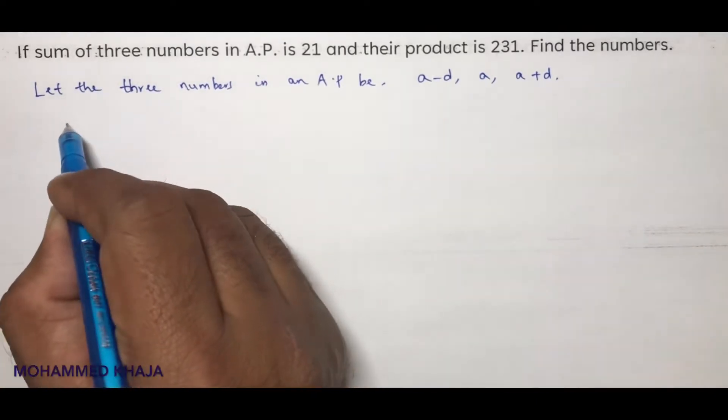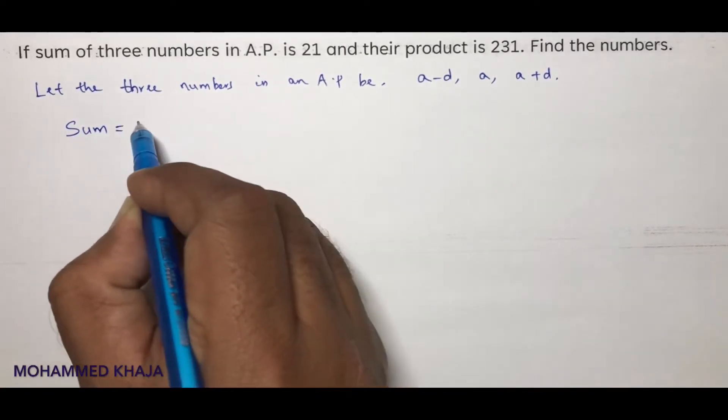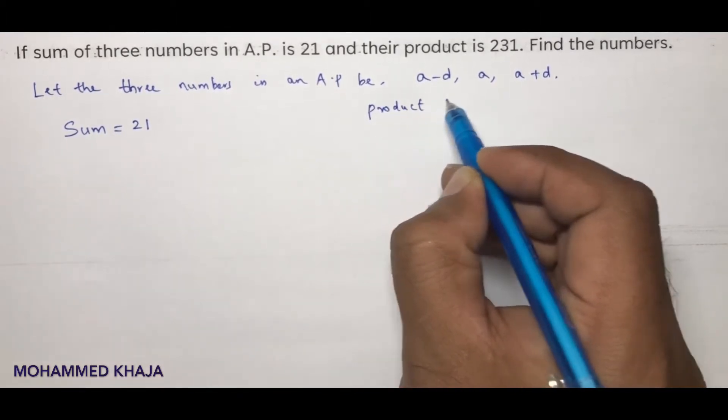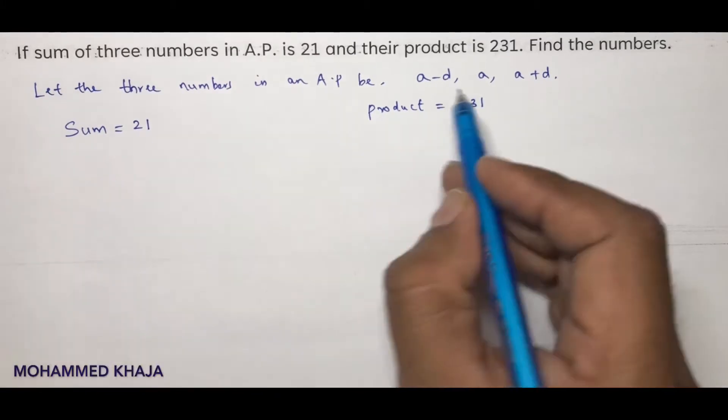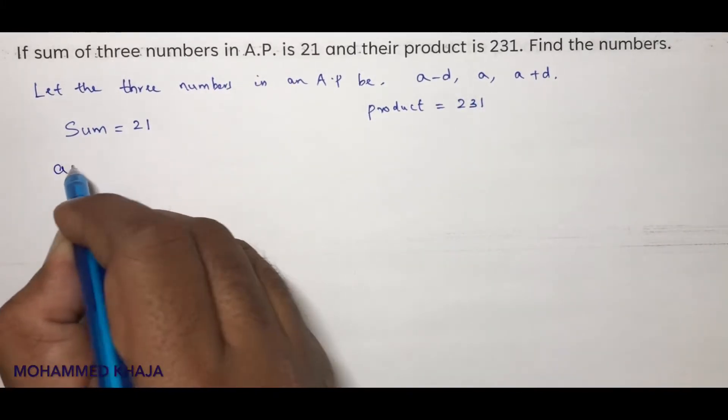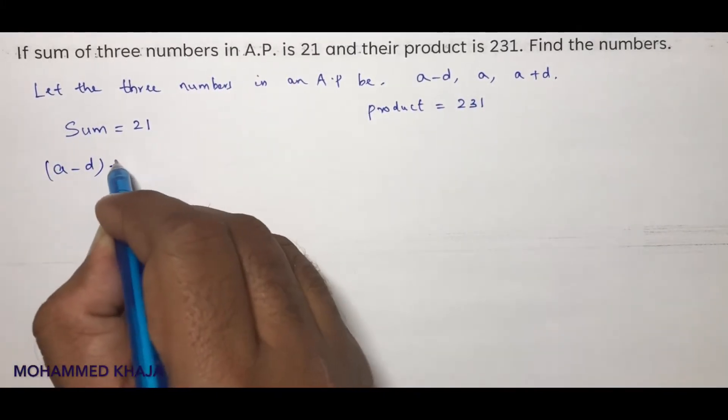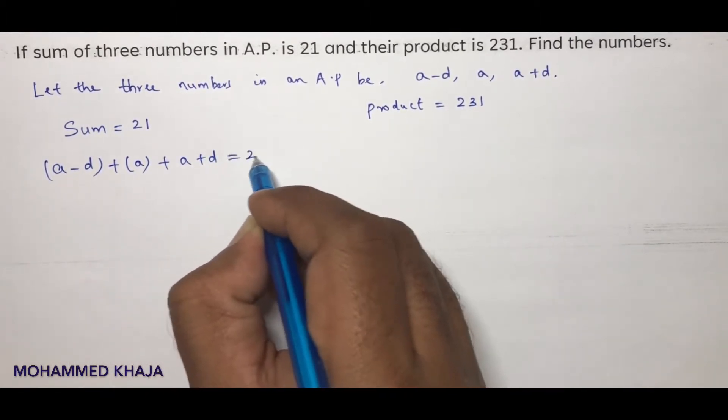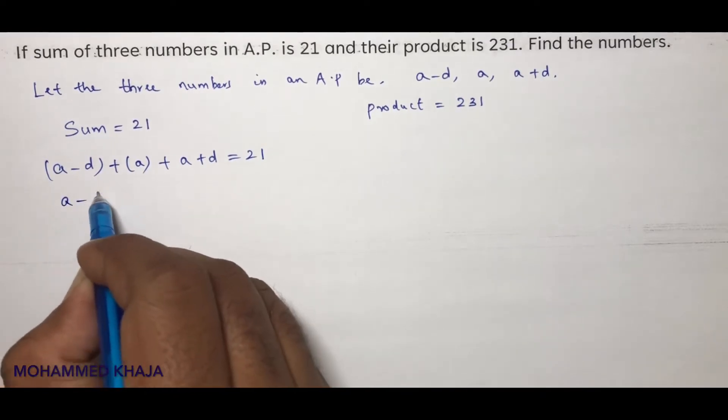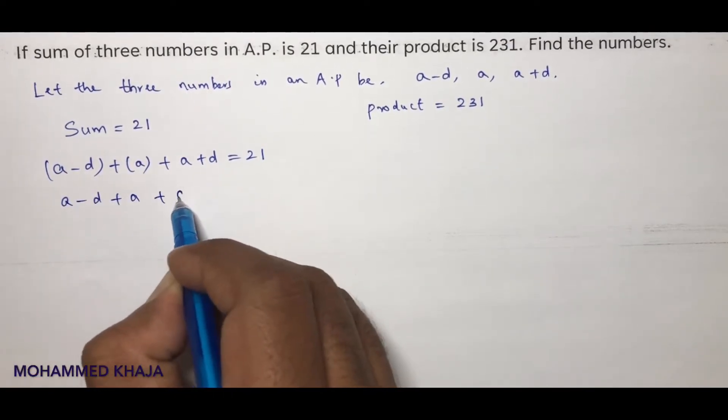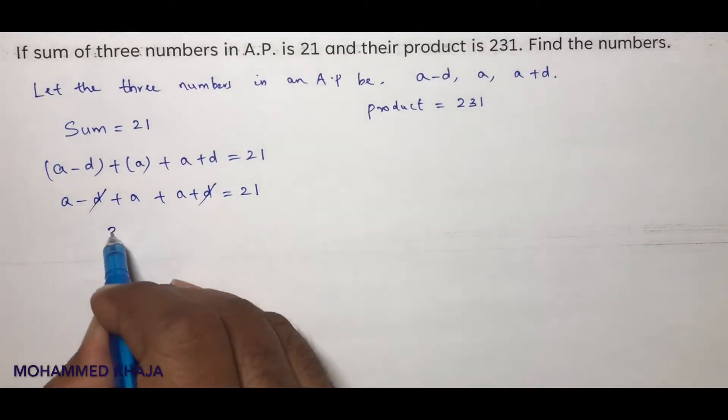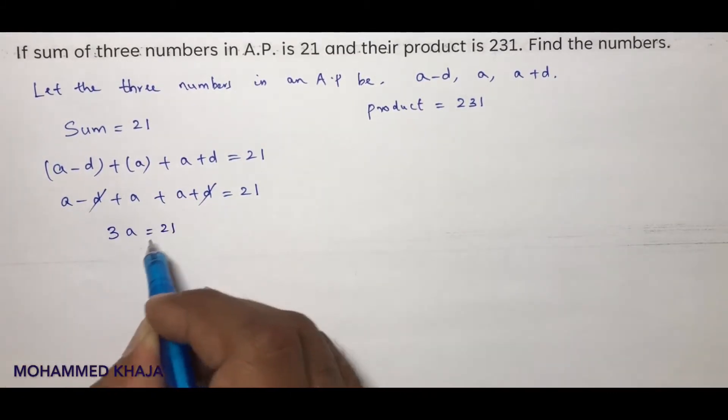Sum is 21 and product is 231. So sum: add those three numbers. A minus d plus a plus a plus d equals 21. Minus d plus d cancel. 3a equals 21. A is 21 by 3, which is nothing but a value is 7.